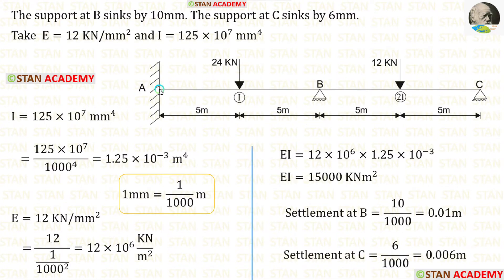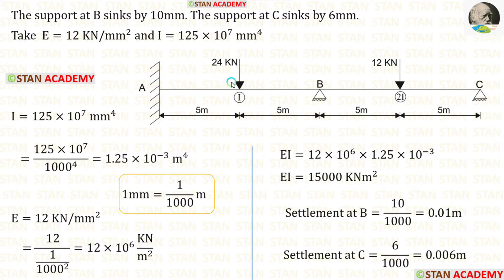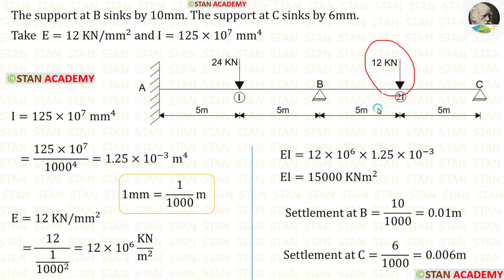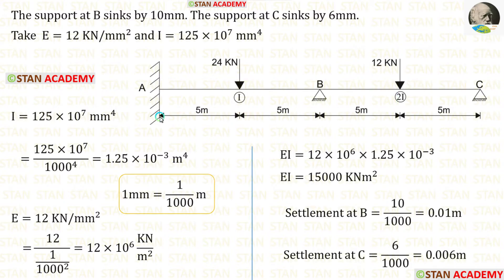In this beam, there are two spans: span AB and span BC. In span AB, there is a point load of 24 kN acting at the center. In span BC also, there is a point load of 12 kN acting at the center. The moment of inertia for span AB is I, and for span BC it is 2I. The length of span AB is 10 m and the length of span BC is also 10 m.